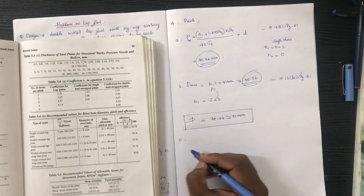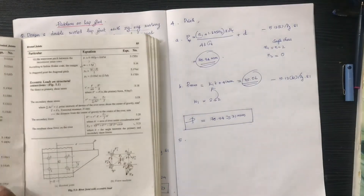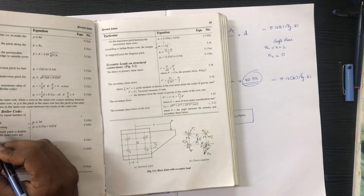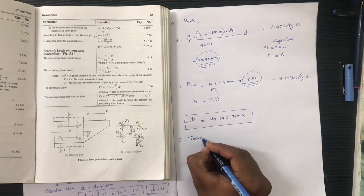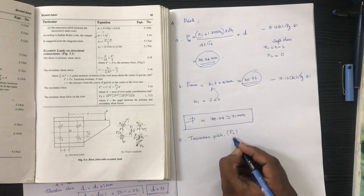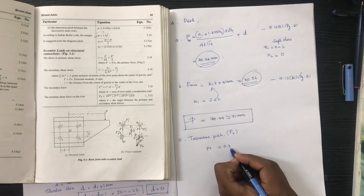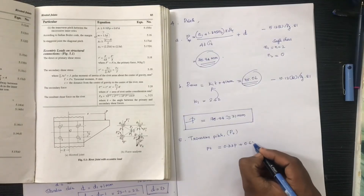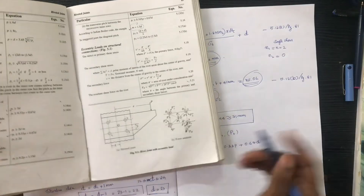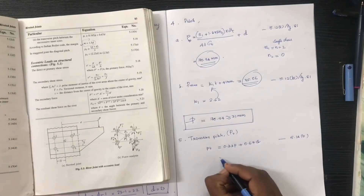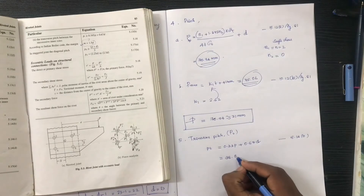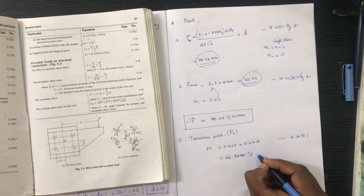The design for pitch also requires the transverse pitch. According to the Indian Boiler Code, for staggered or zigzag riveting, the transverse pitch Pt is equal to 0.33p plus 0.67d. For chain riveting, Pt equals 2d. That is formula 5.14b. Substituting values gives approximately 38.84mm, which is rounded to 40mm.